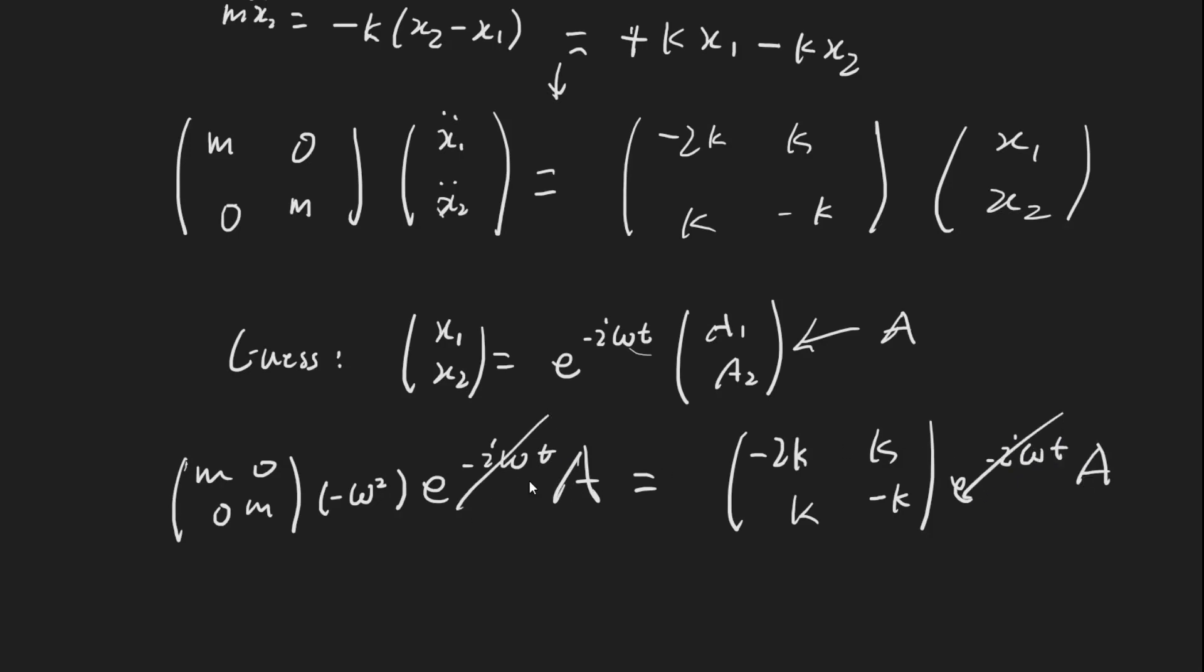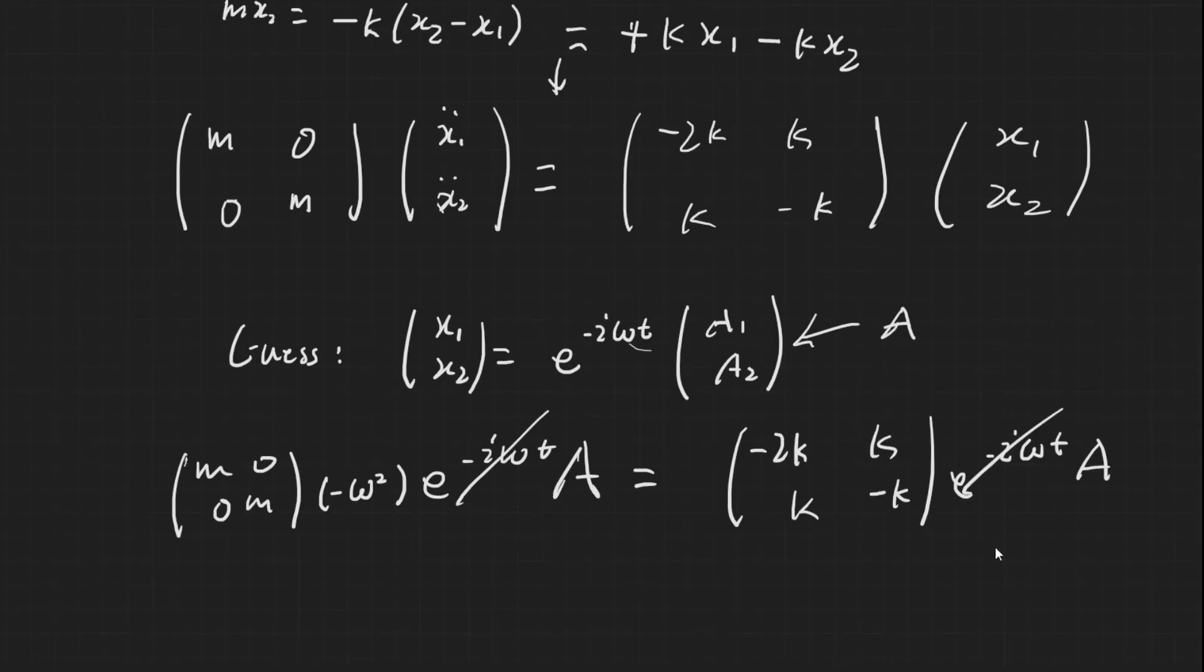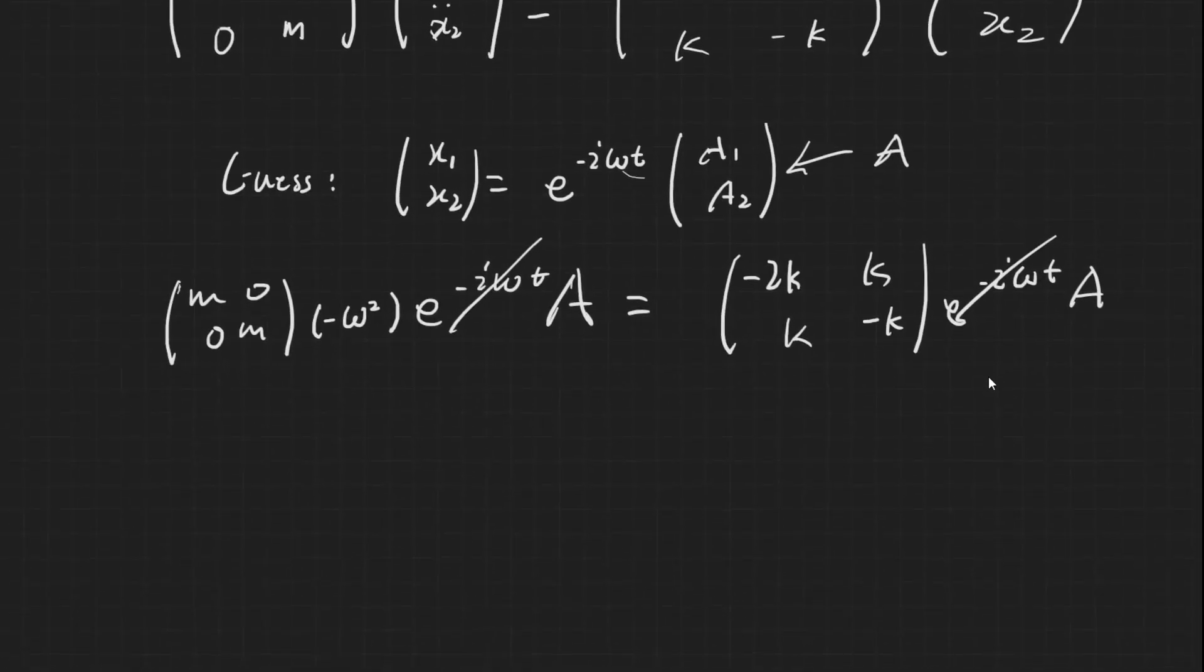So here we can cancel just constant factors, and since we're working with matrices, we can't exactly cancel the A's. Now, before we move things over, we're going to multiply by the inverse matrix of this, because it's just pretty standard to do that. I don't think it really matters, but everybody just does that.